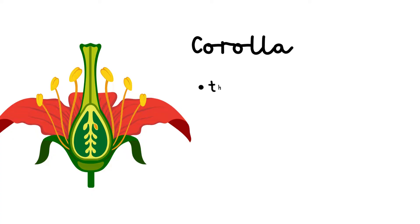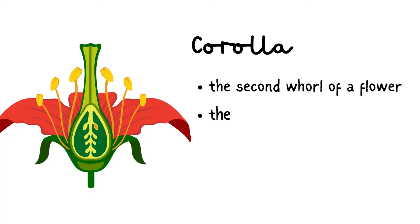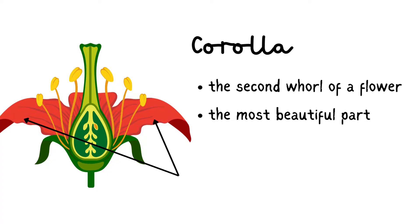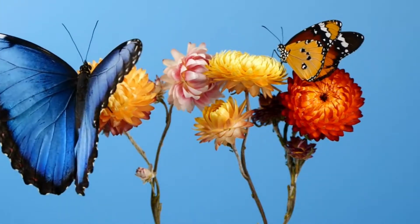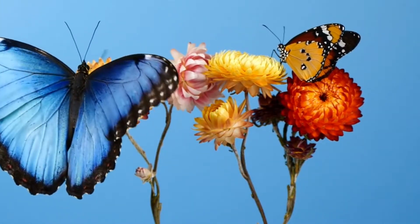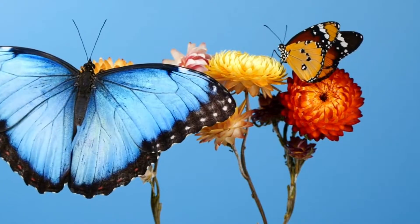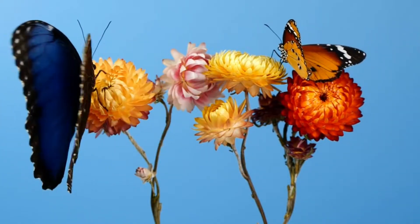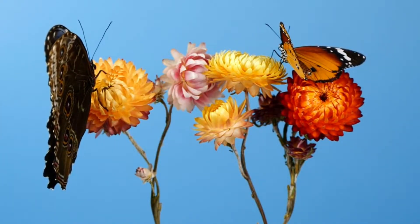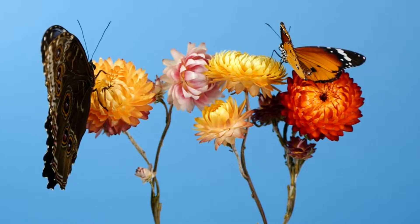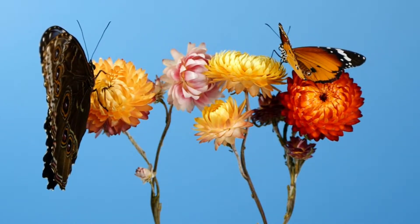Corolla. It is the second whorl of a flower and the most beautiful part of the flower. It is made of brightly colored leaf-like structures called petals. Function: the bright and colorful petals attract insects towards the flower. Petals may also have fragrance to attract insects and birds. These creatures help in the process of pollination.